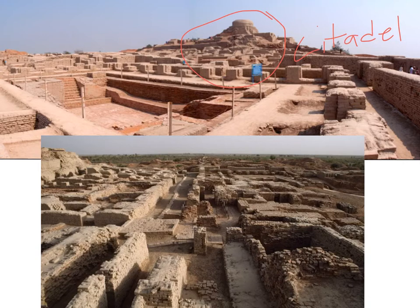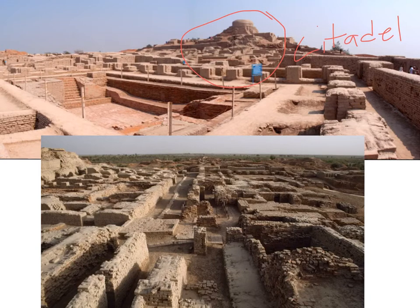The language of the people is still a mystery — their writings appear on square seals, but experts have not yet been able to figure out the writing. The form of government and the religion of Mohenjo-daro are also unknown. No royal tombs or great temples have been found, but we do know they had a number of gods.